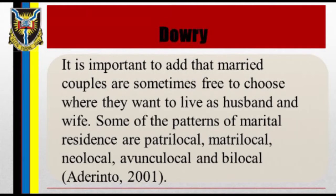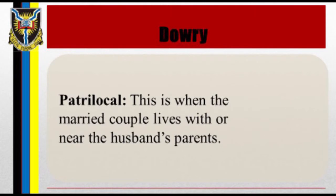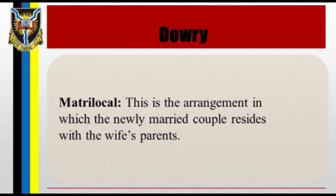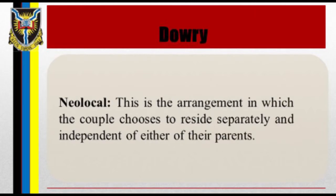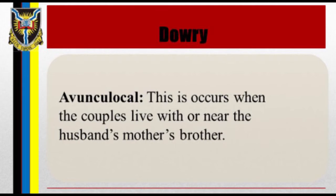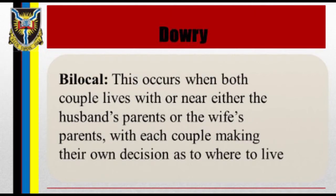Married couples are sometimes free to choose where they want to live as husband and wife. Some of the patterns of marital residence are: patrilocal, matrilocal, neolocal, avunculocal, and bilocal (Adherentor, 2001). Marital residence is patrilocal when the married couple lives with or near the husband's parents. The arrangement in which the newly married couple resides with the wife's parents is known as matrilocal. Where the couple chooses to reside separately and independently of either of their parents, it is called neolocal. Avunculocal residence is where both spouses live with or near the husband's mother's brother. Bilocal residence is where the couple lives with or near either the husband's parents or the wife's parents, with each couple making their own decision as to where to live.